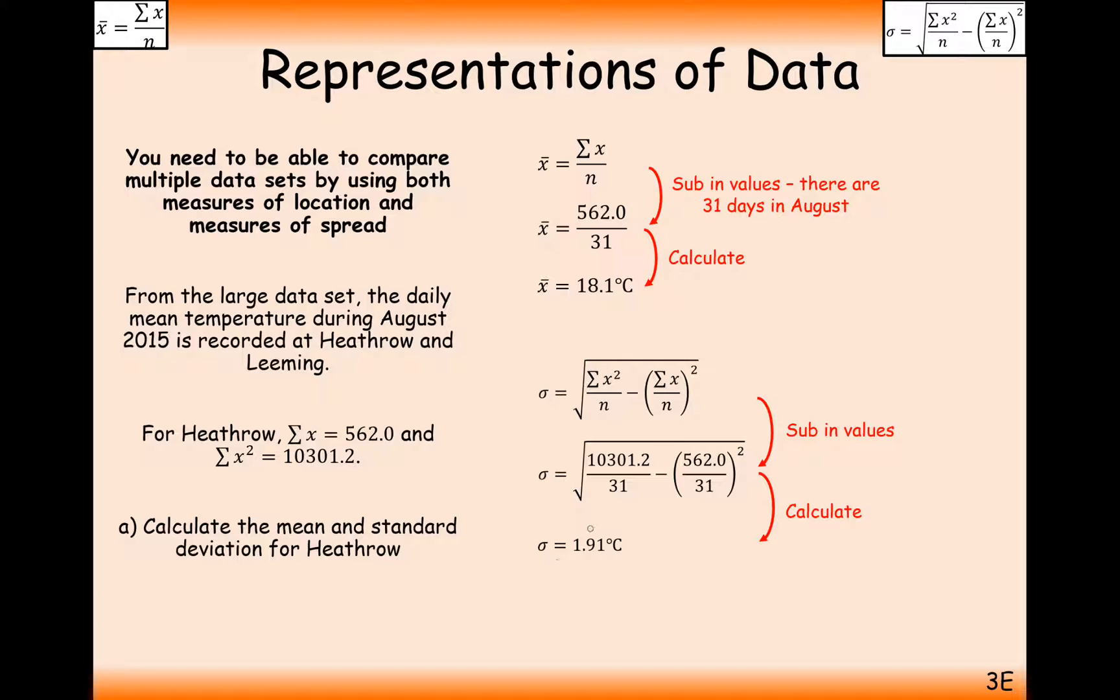So on average, our data is spread out by about 2 degrees from the central point of 18.1.